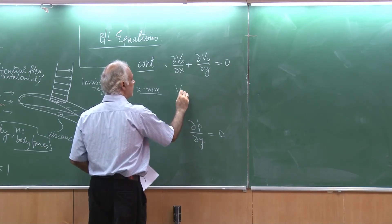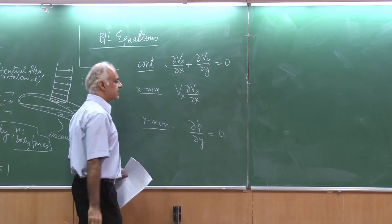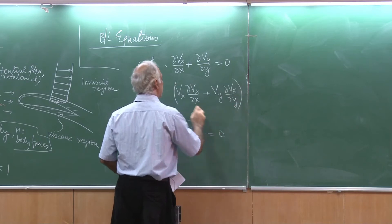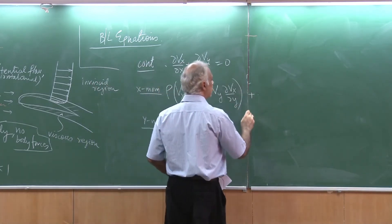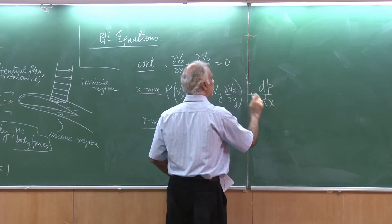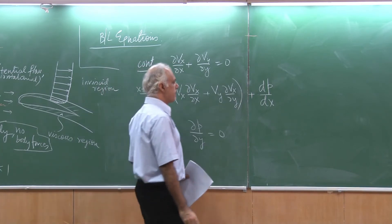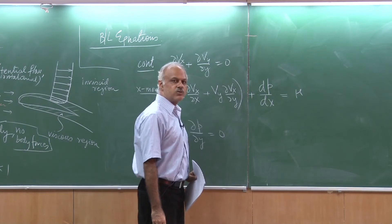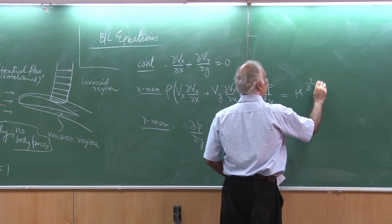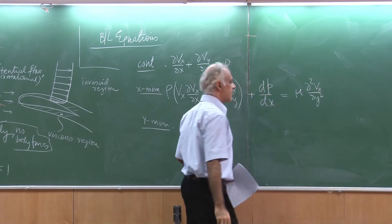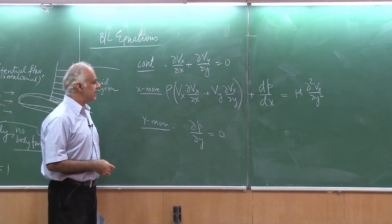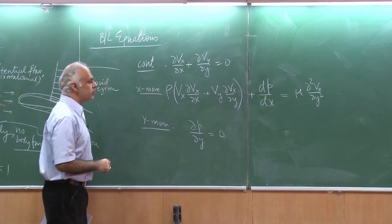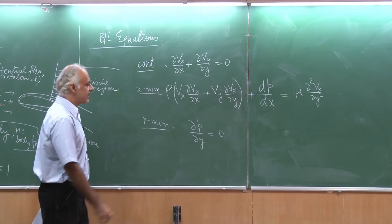For the x momentum equation, I will retain the convection term. The first term is rho Vx del Vx by del x. The next term is rho Vy del Vx by del y. Then I have the pressure gradient, but this time I can write it simply as dP dx because my pressure is only a function of x. For the viscous terms, the del squared Vx by del x squared term is negligible, so no need to keep it, and we get mu times del squared Vx by del y squared. These are your boundary layer equations - much simpler than the full Navier-Stokes equations.